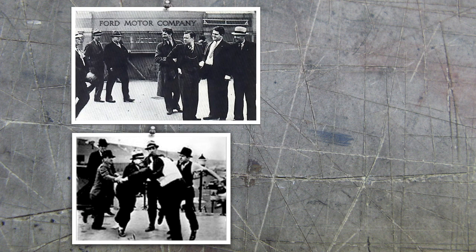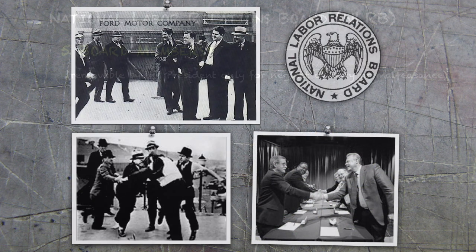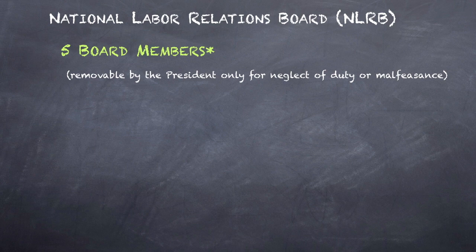The Universal Camera saga gives us an opportunity to explore what the substantial evidence standard means. The saga begins with the Wagner Act, which created the National Labor Relations Board (NLRB), tasked with promoting labor peace while protecting workers' rights to organize and bargain collectively with larger employers. The NLRB consists of five members and has power to determine whether unfair labor practices have occurred, as determined in formal adjudicatory section 556 and 557 proceedings.